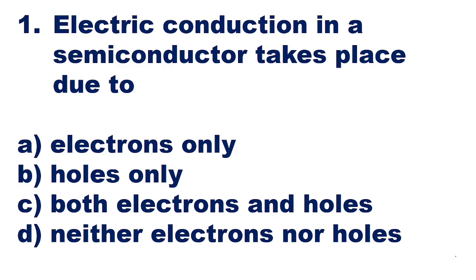In this question, it is asked that electric conduction in a semiconductor takes place due to which of the following options: electrons only, holes only, both electrons and holes, or neither electrons nor holes.